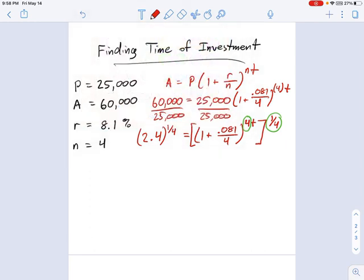So let's work through this and see what this is. 2.4 to the one-quarter power is 1.244, I'm going to put a lot of decimals on this, 666. And on the right side, that one-fourth times the 4 means this is what we have, 1 plus, you know what, instead of writing 0.081 divided by 4, I'm just going to do the math on that one. And this is, let's see, 1.02025 to the t.